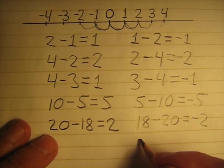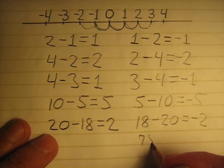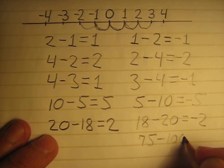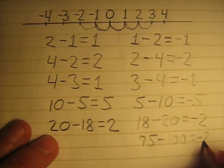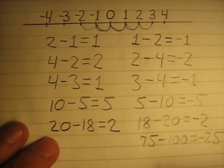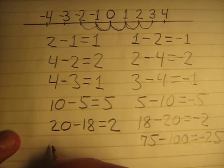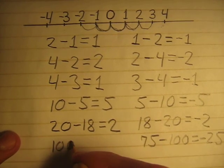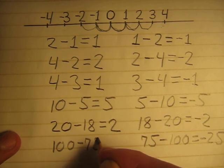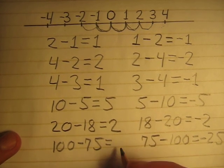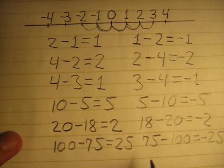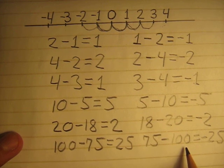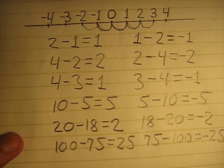And how much is 75 minus 100? The answer is negative 25. Because 100 minus 75 equals positive 25, so 75 minus 100 equals negative 25.